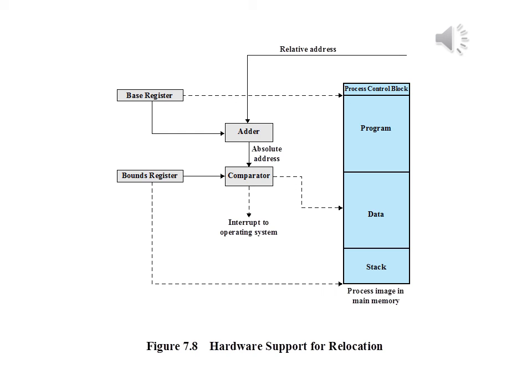Each such relative address goes through two steps of manipulation by the processor. First, the value in the base register is added to the relative address to produce an absolute address. Second, the resulting address is compared to the value of the bounds register. If the address is within bounds, then the instruction execution may proceed. Otherwise, an interrupt is generated to the operating system, which must respond to the error. This scheme allows programs to be swapped in and out of memory during execution and also provides a measure of protection, as each process image is isolated by the contents of the base and bounds registers and safe from unwanted accesses by other processes.